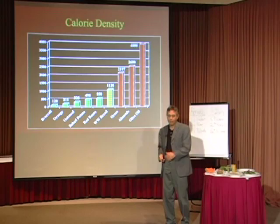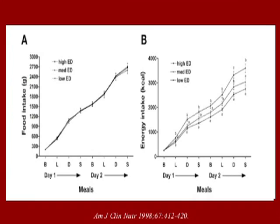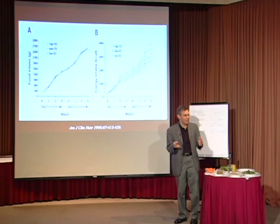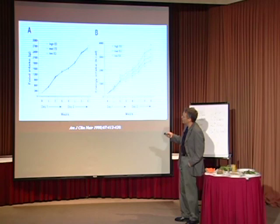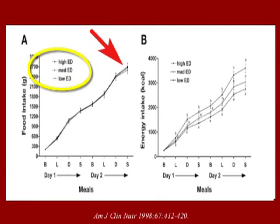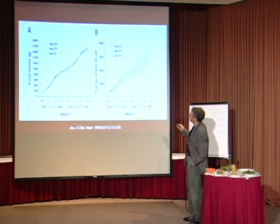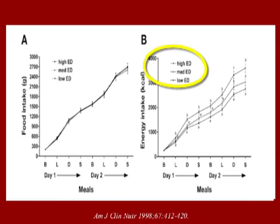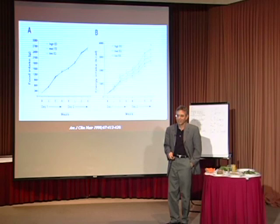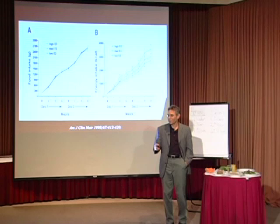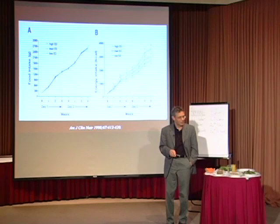Here's one of the studies. She followed people over a few days to watch the amount of food they ate — she didn't tell them anything, she just watched them. It turned out that regardless of what you ate, the weight of the foods you ate was pretty similar. People eat a certain amount of food by weight each day. But depending on whether it was high or low in calorie density — ED means energy density or calorie density — look what happened to the caloric intake. Because we ate a similar weight of food, if we change the calorie density, what happens to the calories we take in? It changes. So you still get to eat all you want, but if you change the calorie density, your caloric intake could go up or down depending which way you go.